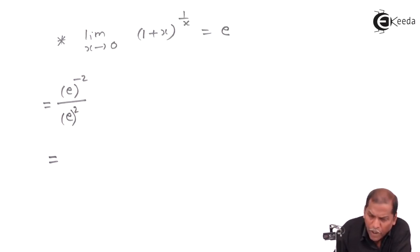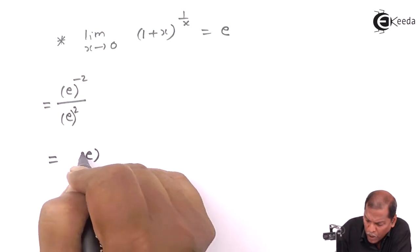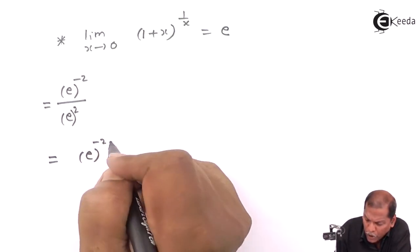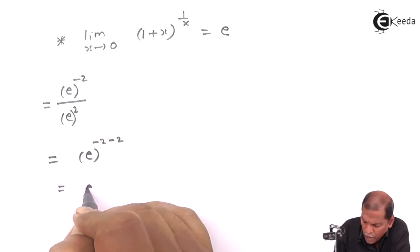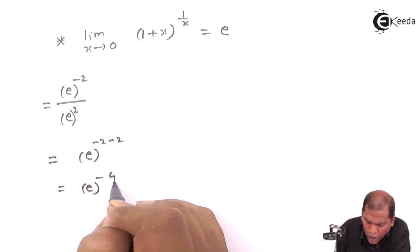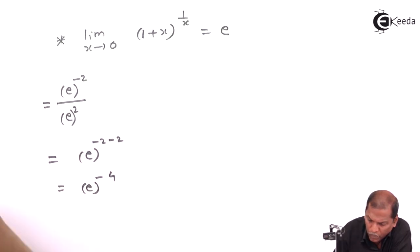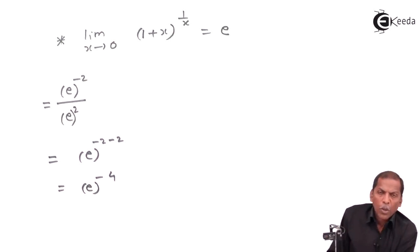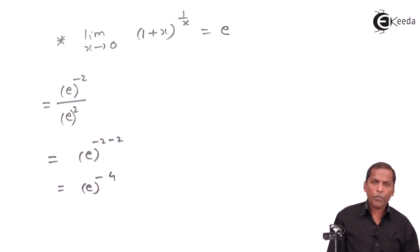That equals, by using the indices law, e raised minus 2 minus 2, which equals e raised minus 4. So this is the required solution of the given problem.